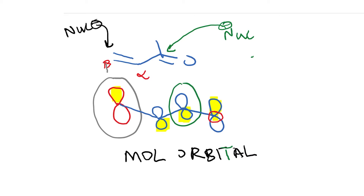From a molecular orbital picture, there is nothing preventing attack from happening on either of these carbons, although it is much more favored from an orbital standpoint to attack at the beta position. So let's try to understand product formation in terms of energetics.